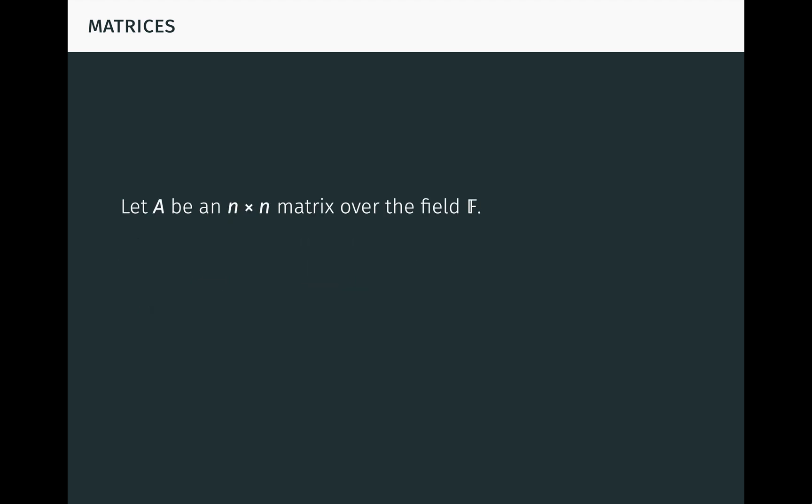Let A be an n-by-n matrix over the field F. Then A induces a linear map φ_A on F^n through multiplication. Here x denotes an n-by-one column vector in F^n, and φ_A of x is A times x, the result of multiplying A by x using ordinary matrix multiplication. The observation here is just that matrix multiplication is linear.